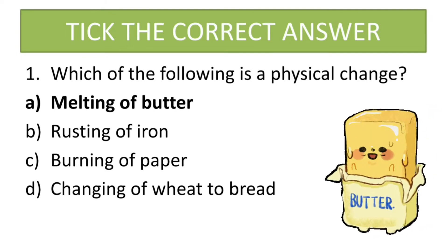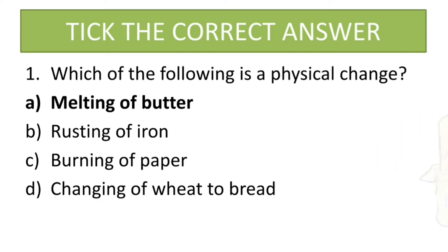The correct answer is melting of butter. Rusting of iron is a chemical change, burning of paper is also a chemical change, and changing of wheat to bread is also a chemical change. Only option A is a physical change because it does not change internally — the internal structure of the butter doesn't change when it melts. So option A is correct.